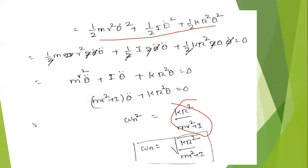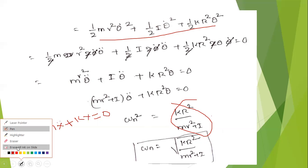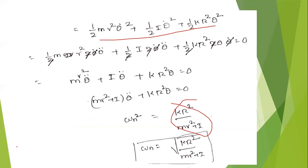From the general equation of the vibrating system: M·Ẍ + K·X = 0. This is the general equation of natural frequency. This is the second problem of the vibrating system.